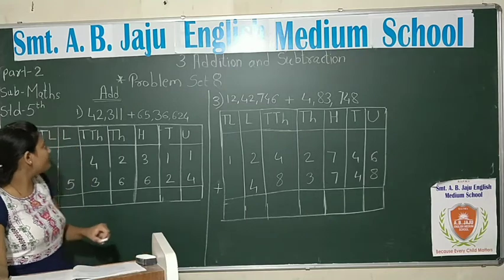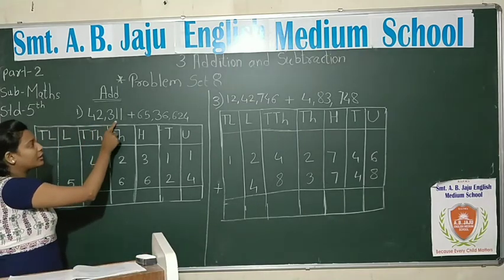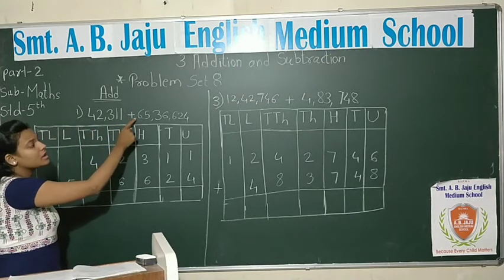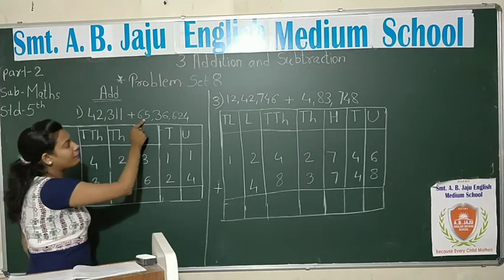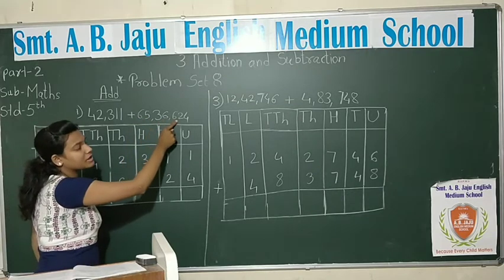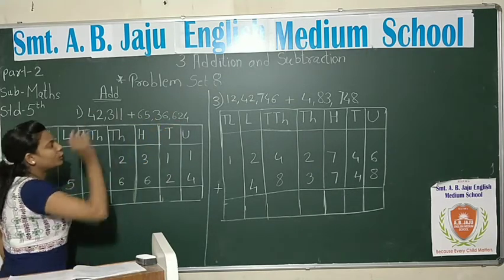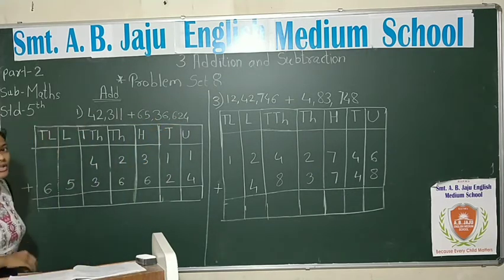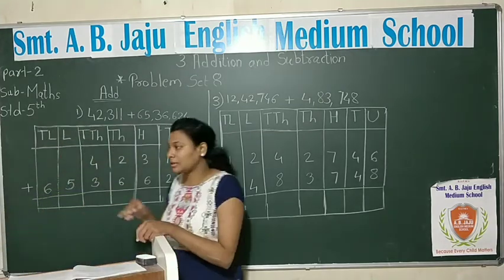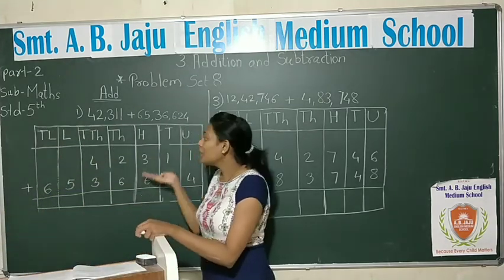So students, our first example is 42,311 plus 65,36,624. You can add this number. Let's look at how you do the addition in writing.